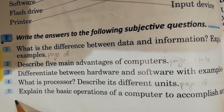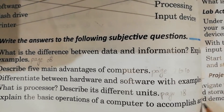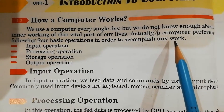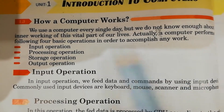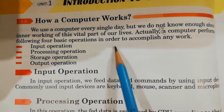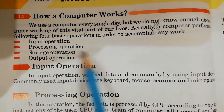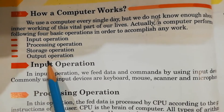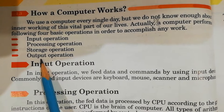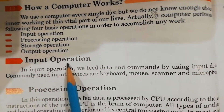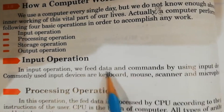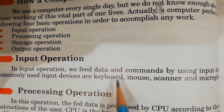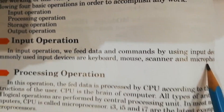Question No.5: Explain the basic operations of a computer to accomplish any work. Its answer is on page No.26. A computer performs the following 4 basic operations: No.1 Input operation, No.2 Processing operation, No.3 Storage operation, No.4 Output operation. In the Input operation, we feed data and commands by using input devices. Commonly used input devices are keyboard, mouse, scanner, and microphone.